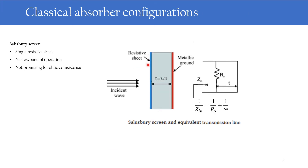The first one is the Salisbury screen. It consists of a resistive layer which is backed by a metallic ground plane at a lambda by 4 distance. This is the equivalent transmission line model of the Salisbury screen. It can be considered as a parallel combination of the resistive sheet and the metallic ground plane. Because of this quarter-wave distance, the impedance of the metallic ground plane becomes infinite. So the total impedance can be represented as: 1 by Zin equals 1 by Rs plus 1 by infinity. From this equation we can see that when the impedance of this resistive sheet becomes equal to Zin, that is 377 ohm, we can obtain absorption from this structure.